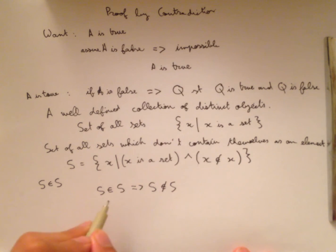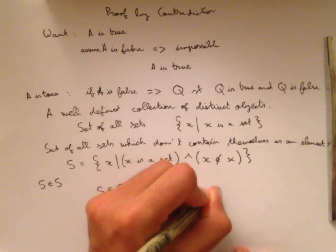And so, assuming that the statement S is an element of S is true, we get that the statement S is an element of S is false. And so, this is a contradiction.